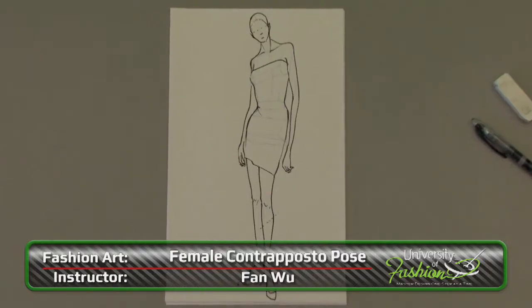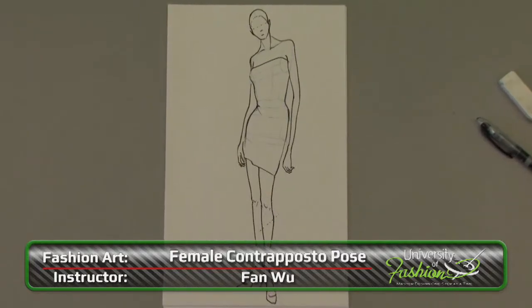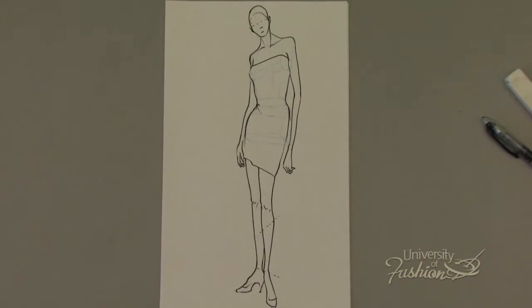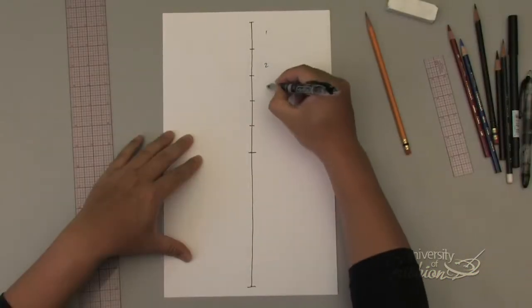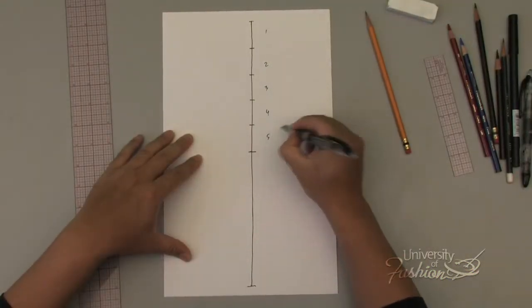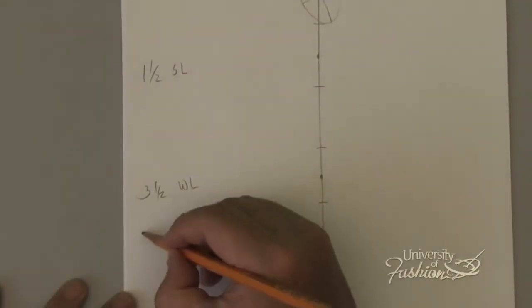Learn how to draw a fashion figure at a three-quarter angle view, known as the contrapposto pose. This lesson teaches you the quick and easy 10-head method, just like they do in fashion college.